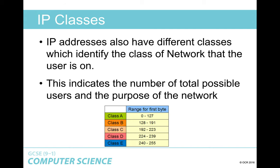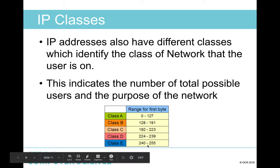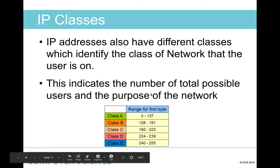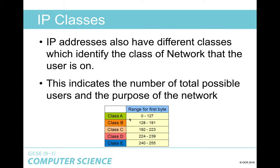IP addresses also have different classes which identify the class of network the user is on. This indicates the number of total possible users and the purpose of the network. You can tell what class your network is in by looking at the first byte — the very first number your IP address starts with — and seeing which class it falls into. If you've found your IP address from the last activity, check the first byte and see which class it is.